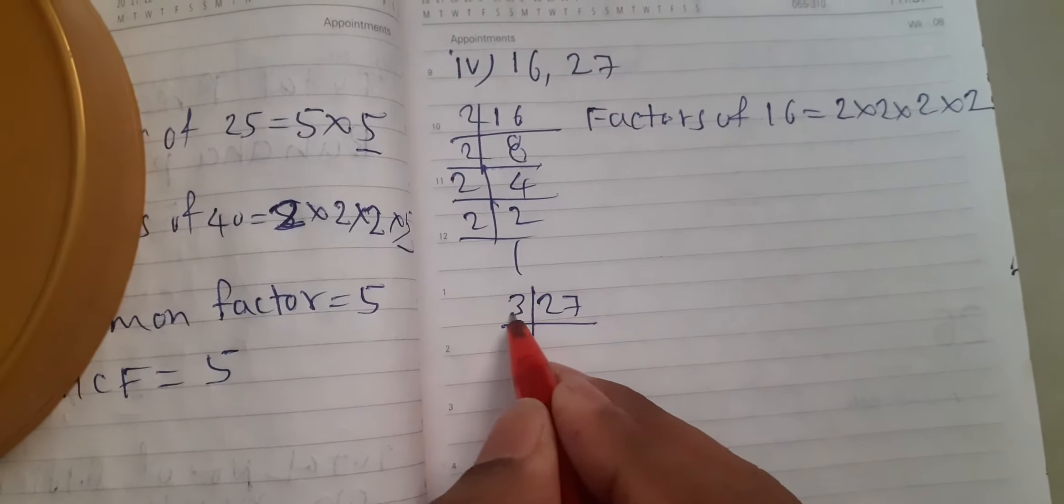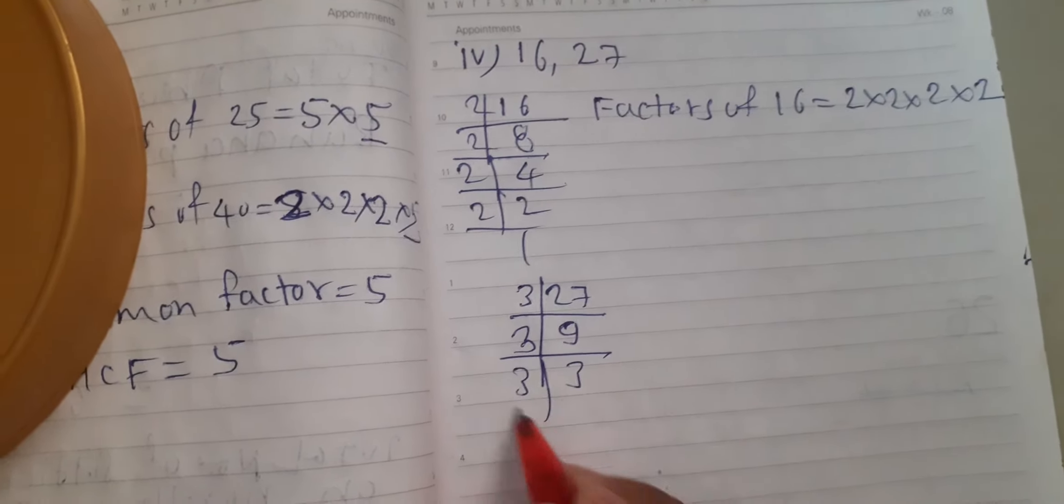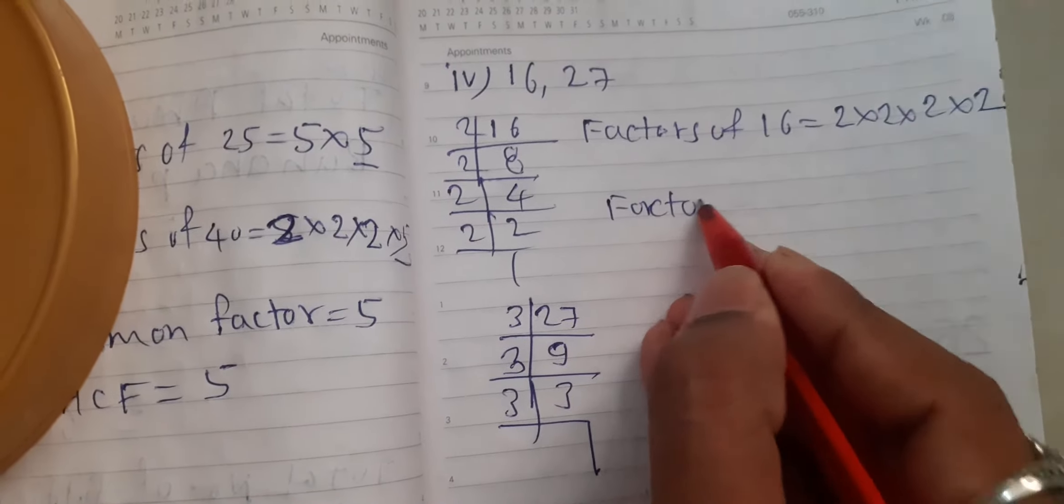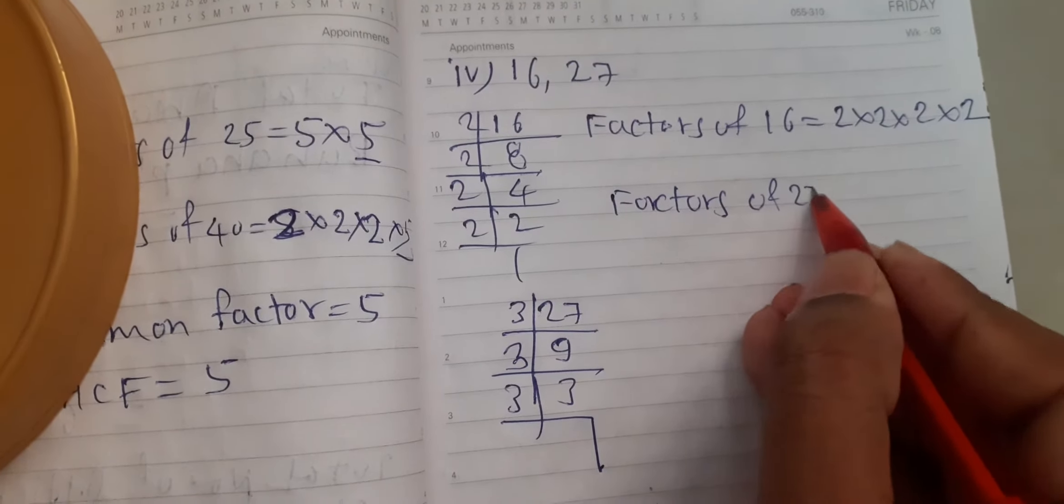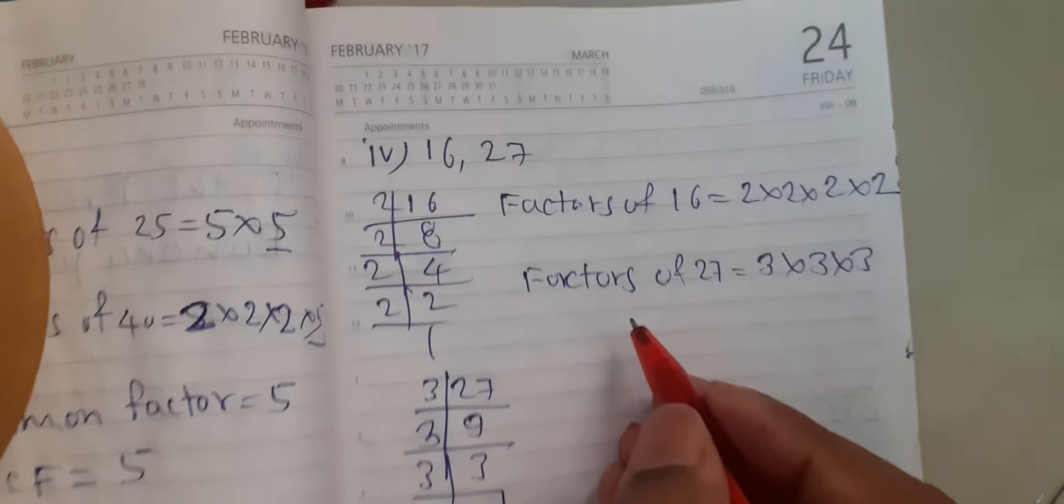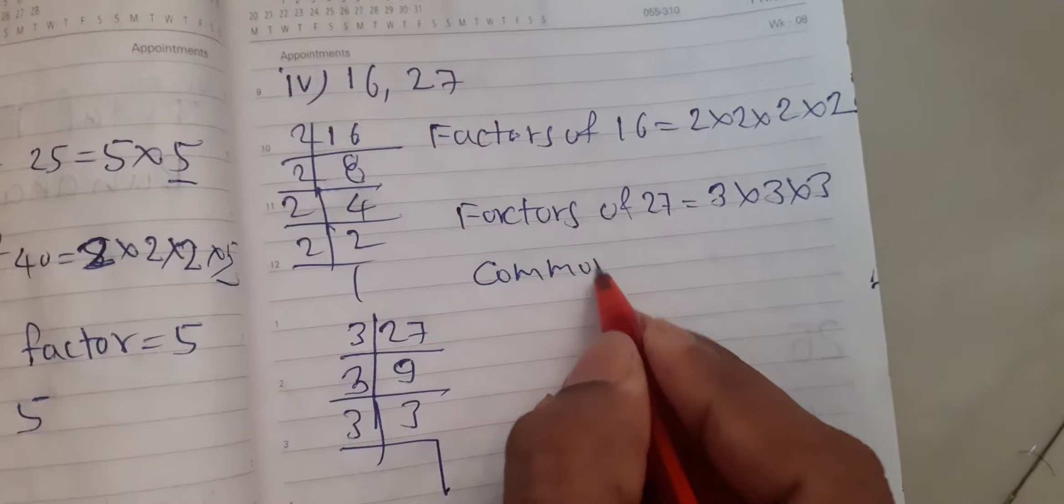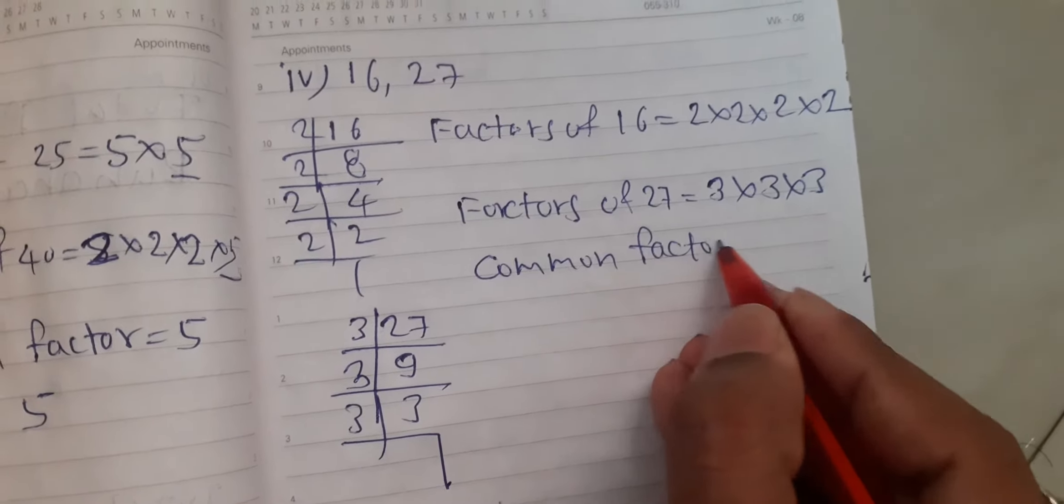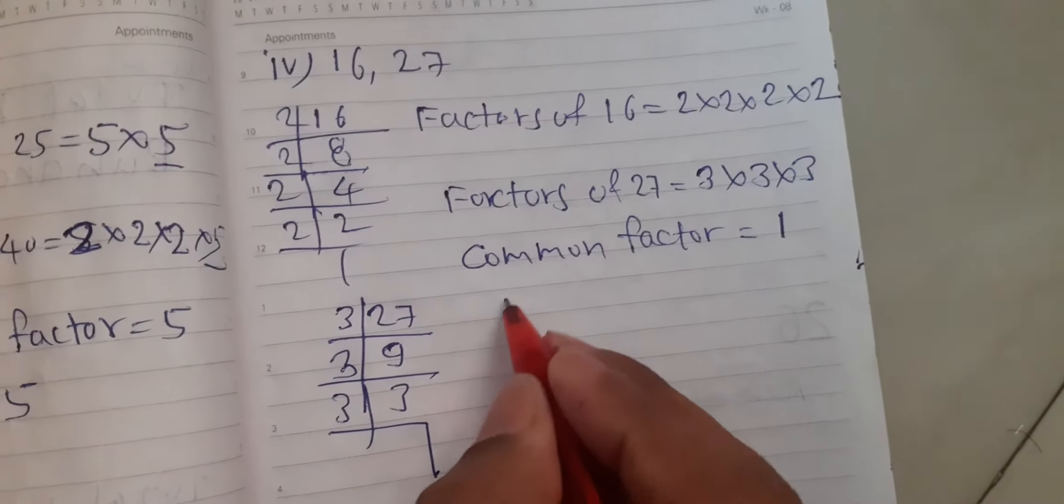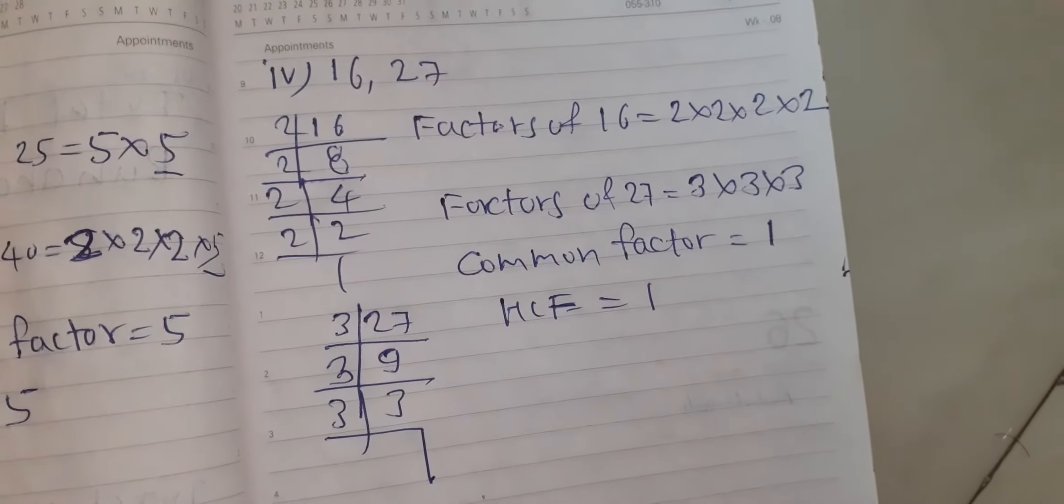Next factor of 27. 2 is not in 3. 3 times 9 is 27, 3 times 3 is 9, 3 times 1 is 3. So factor of 27 is equal to 3 into 3 into 3. There is no common factor. HCF is 1.